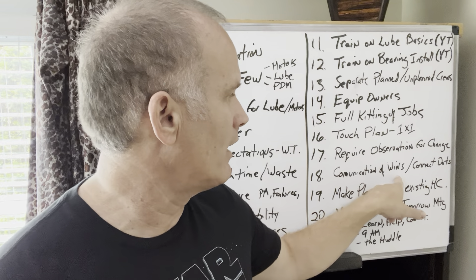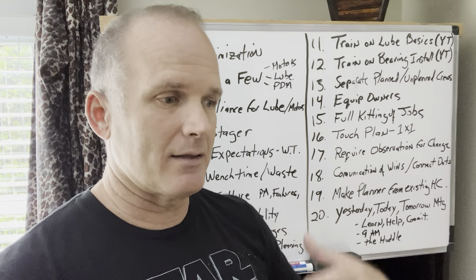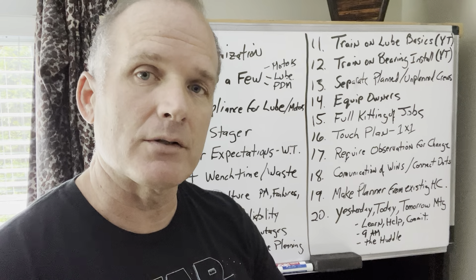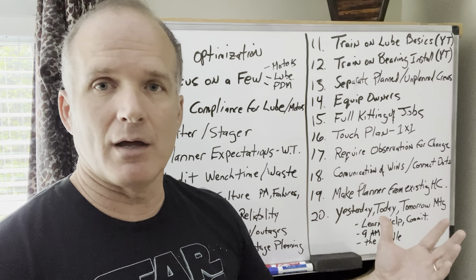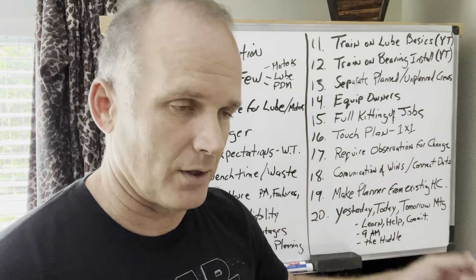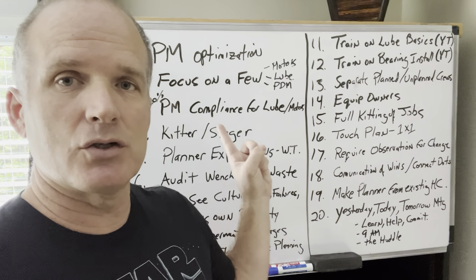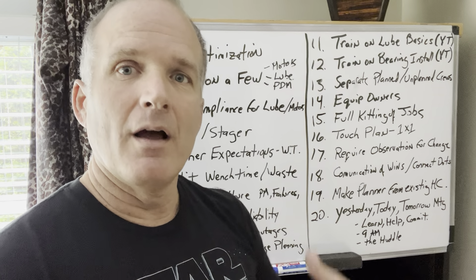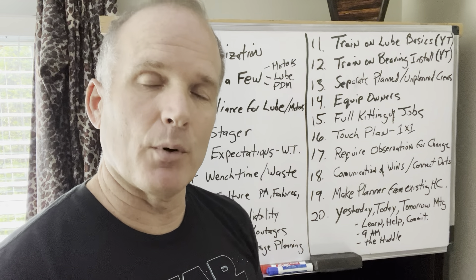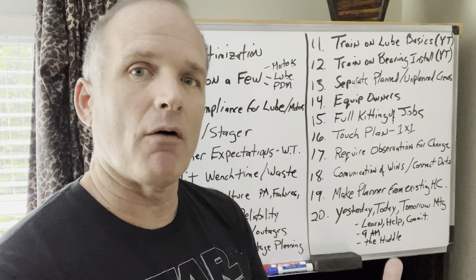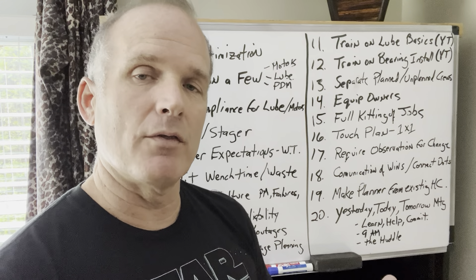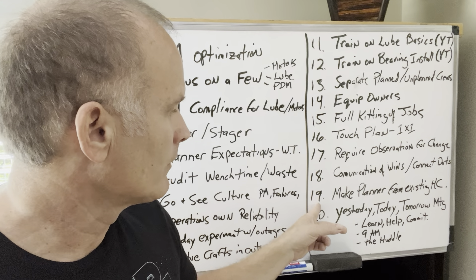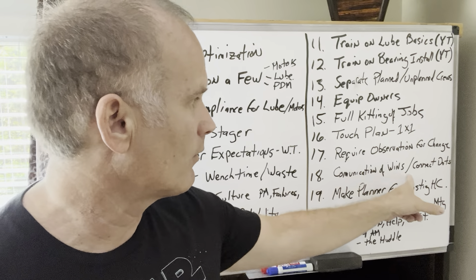Number eighteen: communicate wins and connect the dots. When you do something proactive that prevents a motor failure — for example, last year you had 10 motor failures, the year before 10, the year before 10, and you've changed your PM practices and now you're only having four — make sure you communicate that win to people and get them excited. Once you get people excited, they'll start offering more ideas and there'll be more enthusiasm in what they do. It's something free you can do to accelerate culture change.